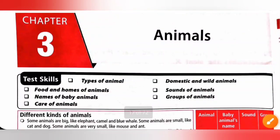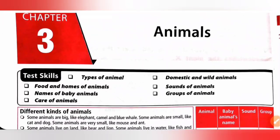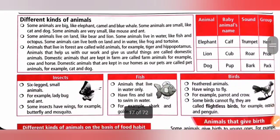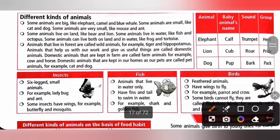Hi my dear kids, in this video we are going to see chapter 3, Animals from MTG Workbook of Class 1 NSO. So different kinds of animals. Some animals are big like elephant, camel and blue whale.